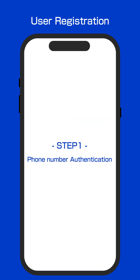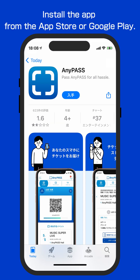Step 1: Phone number authentication. First, install the app from the App Store or Google Play.